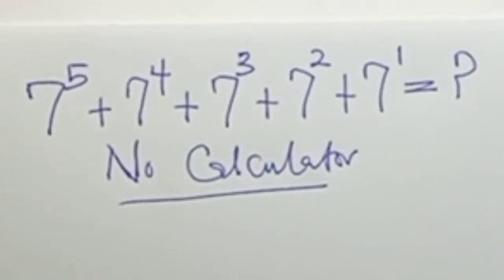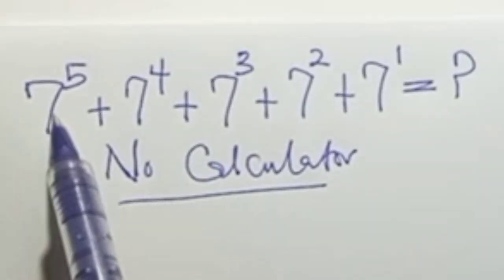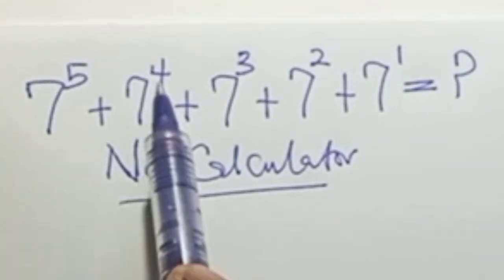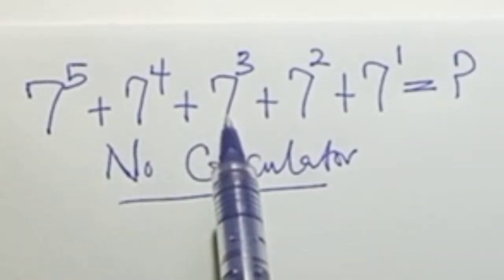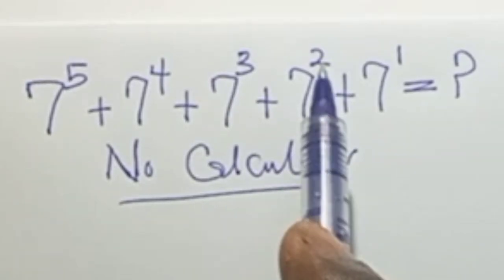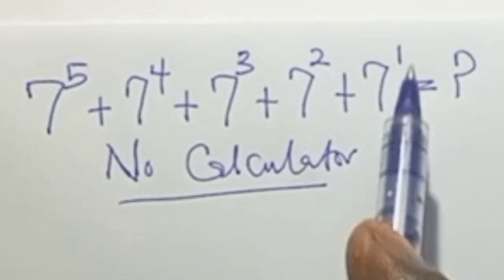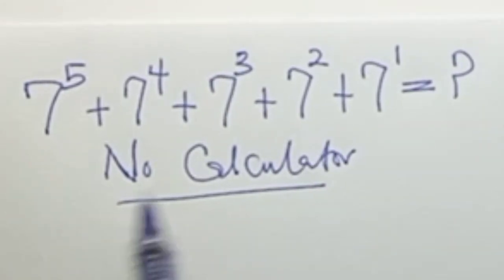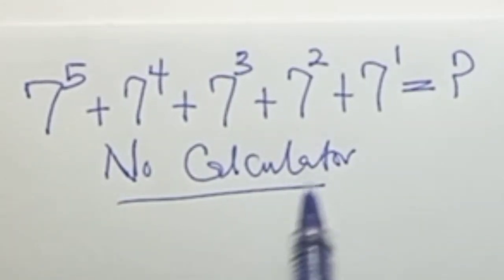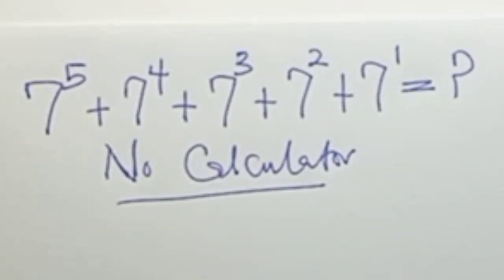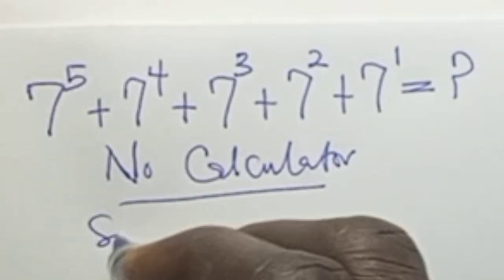Hello everyone! We have 7 to the power of 5 plus 7 to the power of 4 plus 7 to the power of 3 plus 7 to the power of 2 plus 7 to the power of 1 to simplify. We are expected to do this without a calculator. So let's look at the solution.